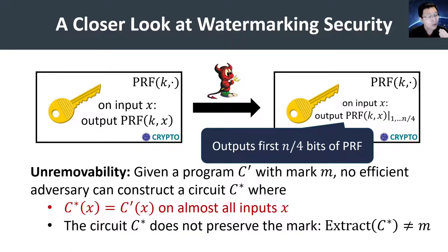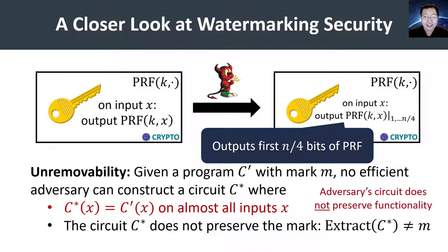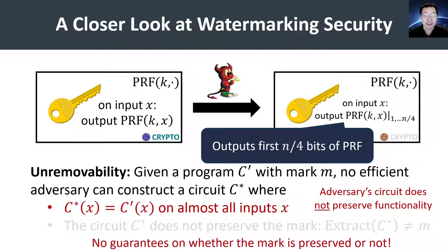Namely, on any input x, it will evaluate the PRF at x, and then truncate the output to only preserve the first n/4 bits. Under the existing security notion, this strategy does not preserve the exact input-output behavior — in fact, it preserves the exact input-output behavior on none of the inputs, and so this is considered to not be functionality-preserving. As such, the definition of unremovability stipulates no guarantees on whether this new program contains the mark or not.